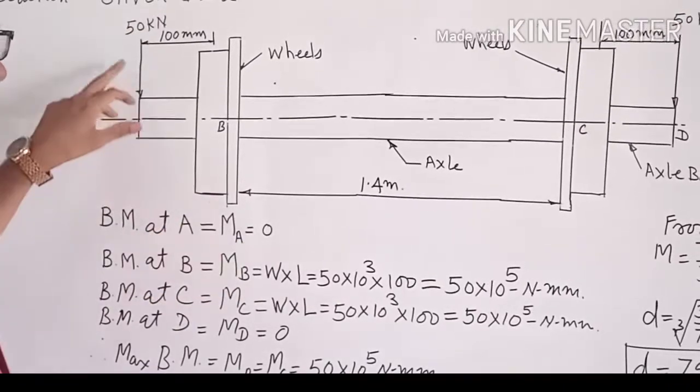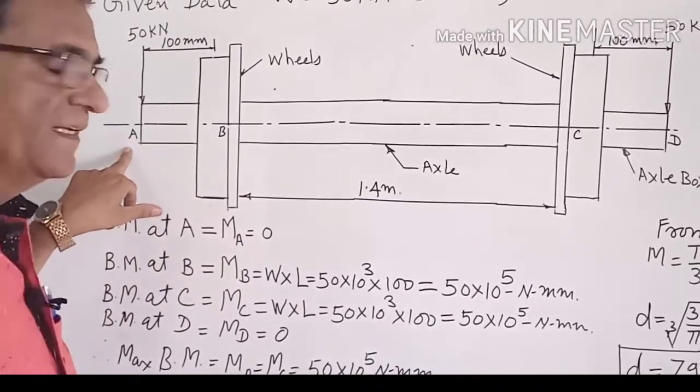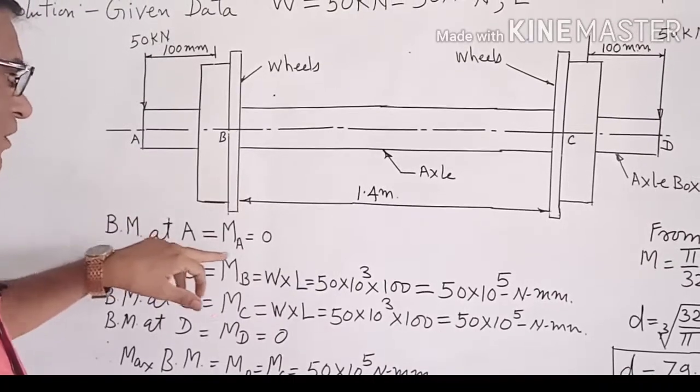We have the bending moment at A. Ma is equal to 0. At this point the bending moment, the value of bending moment is 0.